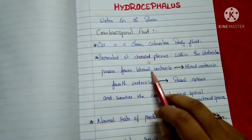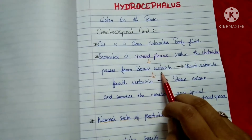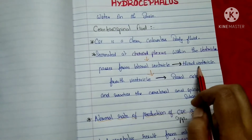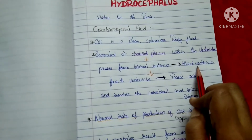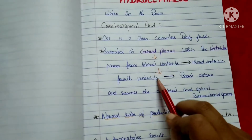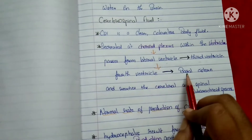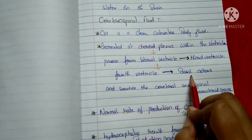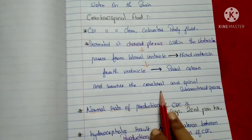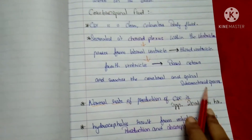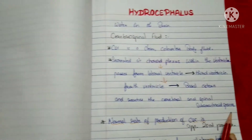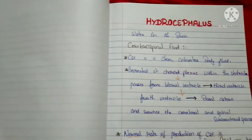From the ventricles, the CSF passes through the lateral ventricle, then to the third ventricle, and to the fourth ventricle. It is produced at the choroid plexus, passes through the lateral ventricle, third ventricle, then fourth ventricle, and to the basal cisterns. Then it reaches the cerebral and spinal subarachnoid spaces, where it is absorbed by the arachnoid villi and passes into venous channels.